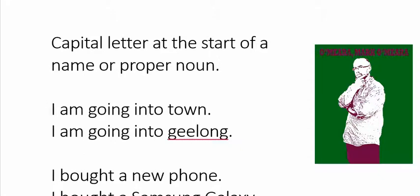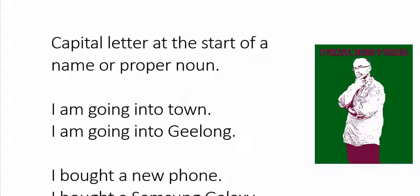For instance, if I'm going to town, town is not the name of that place — it is just what sort of thing it is. It's just a describing word; it's not a place called Town. However, if I'm going to a place called Geelong, which is a specific place, then it gets a capital G. Depending on where I live, if I say I'm going into town, I might mean Point Cook, Melbourne, or Sydney. But if I say I'm going to Geelong, you're naming a particular town.